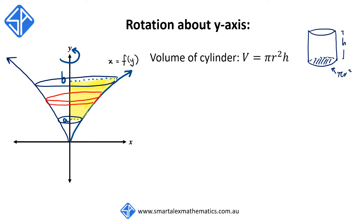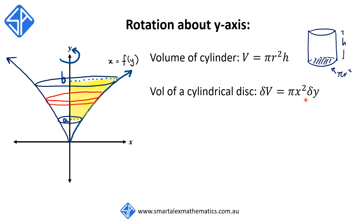We can apply this formula to finding the volume of each cylindrical disk, so that we have the volume of a cylindrical disk — which we're going to call delta v — is equal to pi times x squared times delta y. The reason that we replace the variable r with x is because the radius of each cylindrical disk is given by the x value corresponding to the y value of the function at that point. The height h is replaced by delta y because delta y is that small increment along the y-axis which represents the height of each disk.